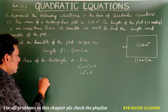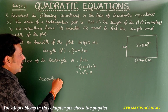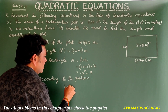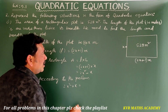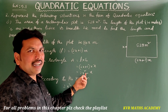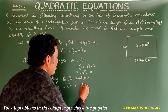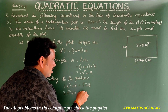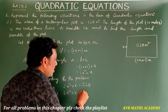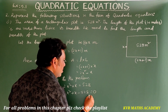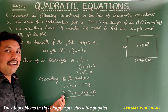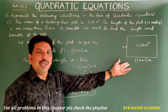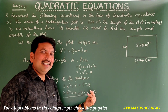According to the problem, 2x² + x = 528. Transferring 528 to the left side: 2x² + x − 528 = 0. This is the required quadratic equation for finding the length and breadth of the rectangle. Understood clearly — note it down.